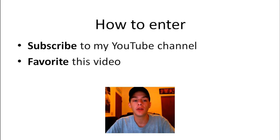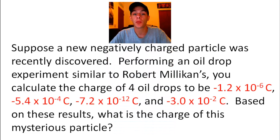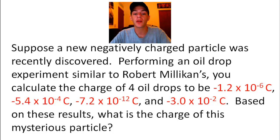The third thing you need to do is correctly answer this question: Suppose a new negatively charged particle was recently discovered. Performing an oil drop experiment similar to Robert Millikan's, you calculate the charge of four oil drops to be negative 1.2 times 10 to the negative 6 coulombs, negative 5.4 times 10 to the negative 4 coulombs, negative 7.2 times 10 to the negative 12 coulombs, and negative 3.0 times 10 to the negative 2 coulombs. Based on these results, what is the charge of this mysterious particle?